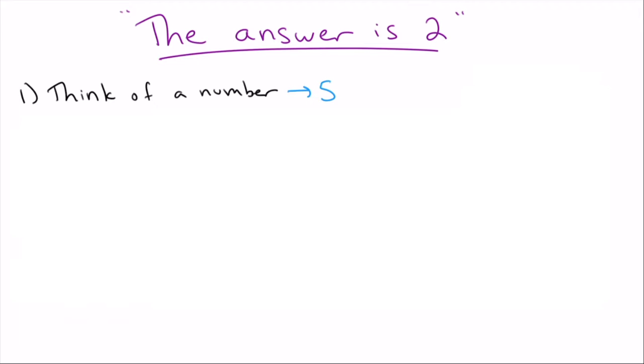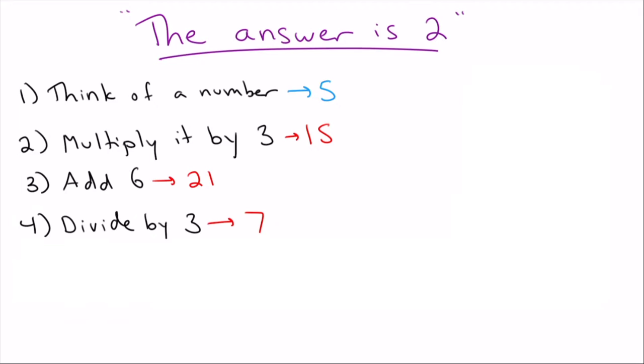The way this problem works is you start by asking the person to think of any number they want. For this one, I thought of the number five. Next, you multiply it by three, which gives us 15. Then you add six to that, which is 21. And finally, you divide by three, which is seven.